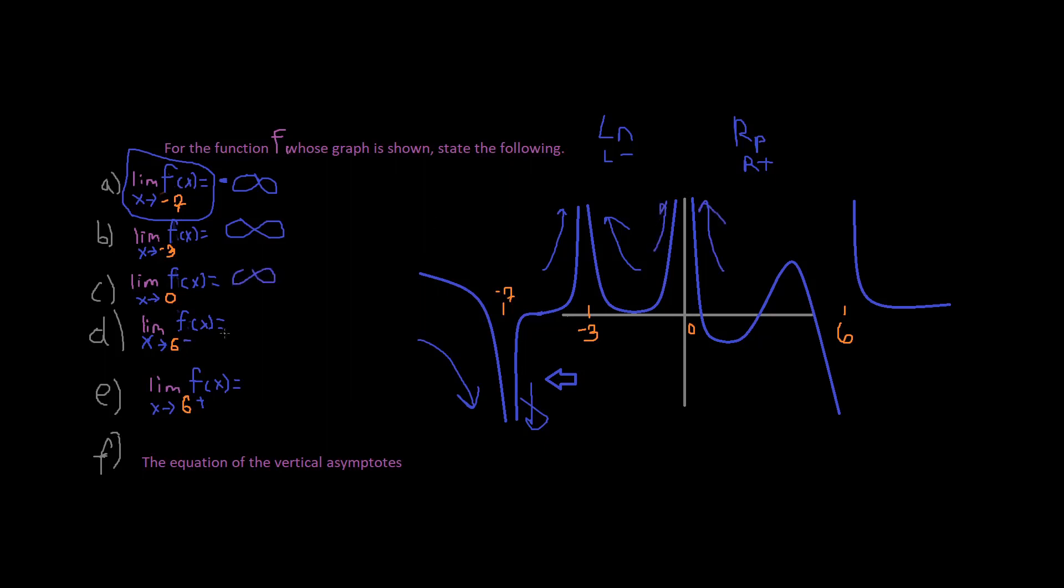So the limit of the function as x approaches six from, let's take a look right here. What does that mean? The left hand side. So that means we're going to go this way. So let's take a look. So if we're going from the left hand side, we're going that way, and then we're going this way. And it appears to me that we're going to negative infinity. And so we just write that out for our answer.